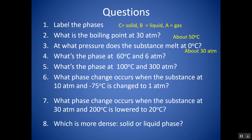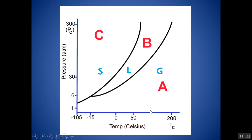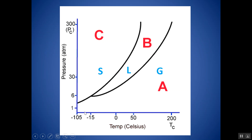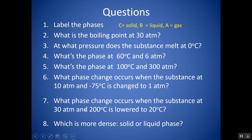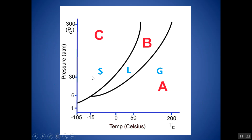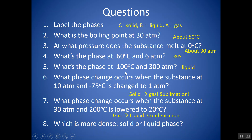What's the phase at 100 degrees and 300 atm? At 100 degrees and 300 atm, the substance is a liquid. What phase change occurs when the substance at 10 atm and negative 75 degrees Celsius is changed to 1 atm? The temperature stays at negative 75 degrees, but pressure drops from 10 to 1 atm — going from solid into gas, which is sublimation. What phase change occurs when the substance at 30 atm and 200 degrees Celsius is lowered to 20 degrees? Pressure stays at 30 atm, temperature drops from 200 to 20 degrees — going from gas into liquid, which is condensation.